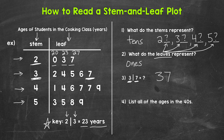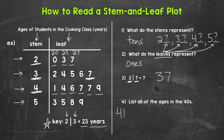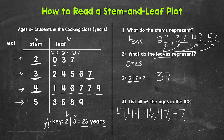Lastly, let's move on to number four, where we need to list all of the ages in the forties. Let's take a look at the stem of four and these leaves, and put the stem together with all of those leaves. We have 41, 44, 46, 47, another 47, and then 49. So those are all of the ages in the forties.